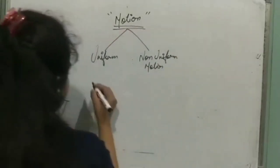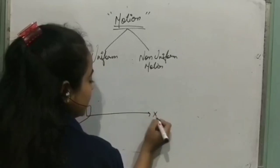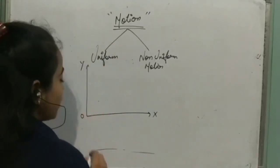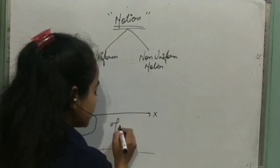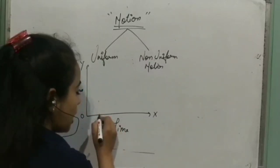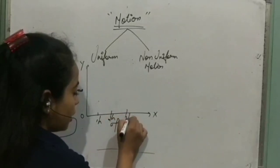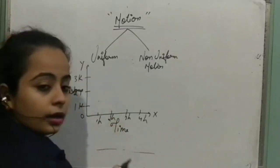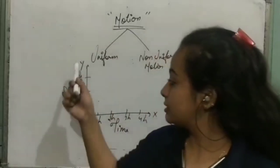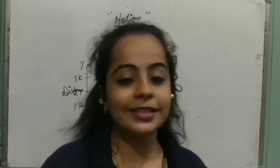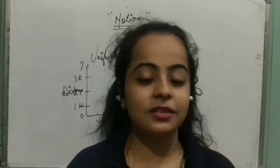Let's take an example for uniform motion with a graph. This is the x-axis and the vertical one is the y-axis. Down I am taking time in hours — 1 hour, 2 hour, 3 hour and 4 hour. And on the y-axis I am taking distance — 1 km, 2 km and 3 km. One important thing: if you are taking distance in km, time should be in hours. If you are taking distance in meters, time should be in seconds. Think of it as km being friends with hours, and meters being friends with seconds.